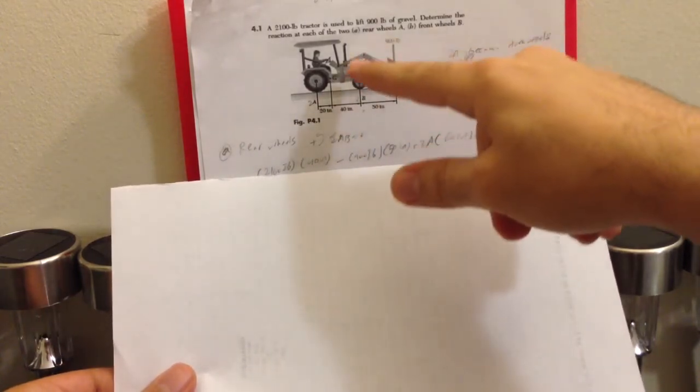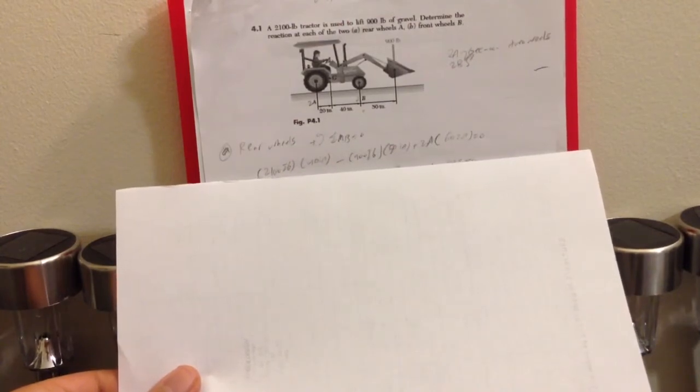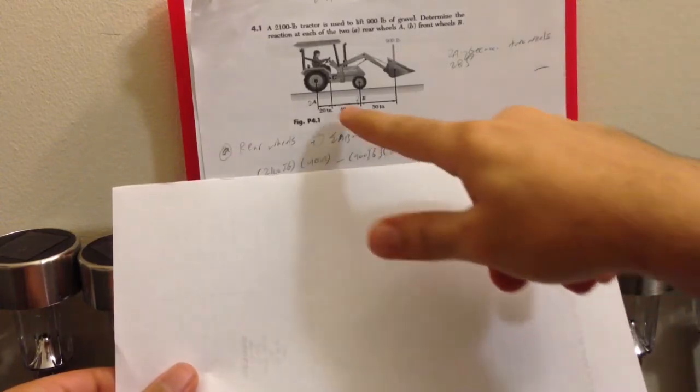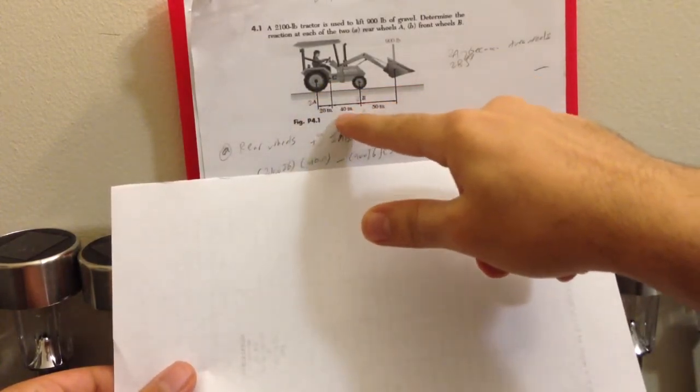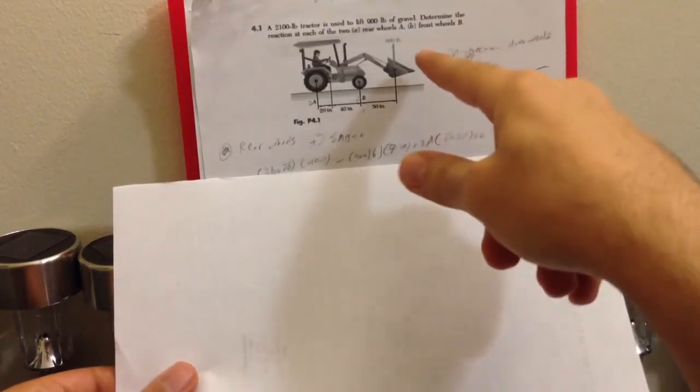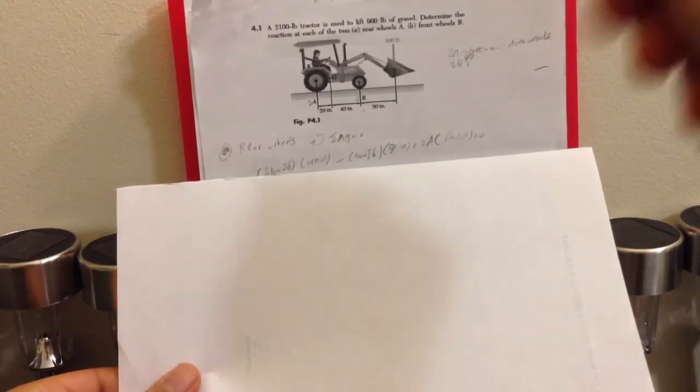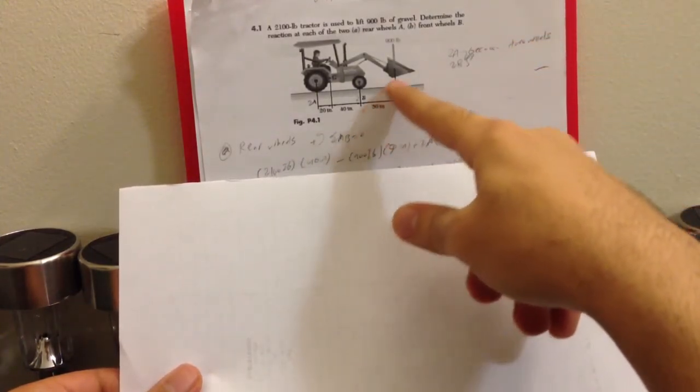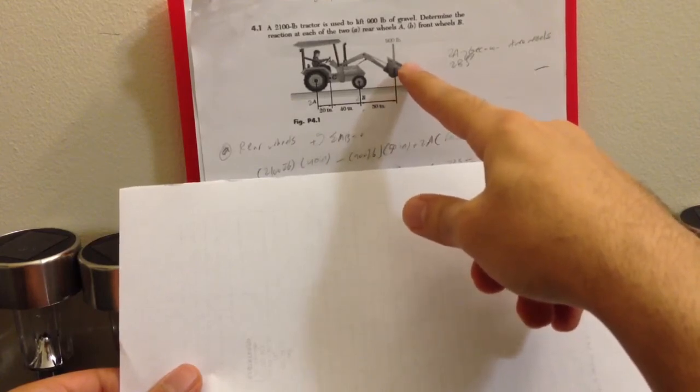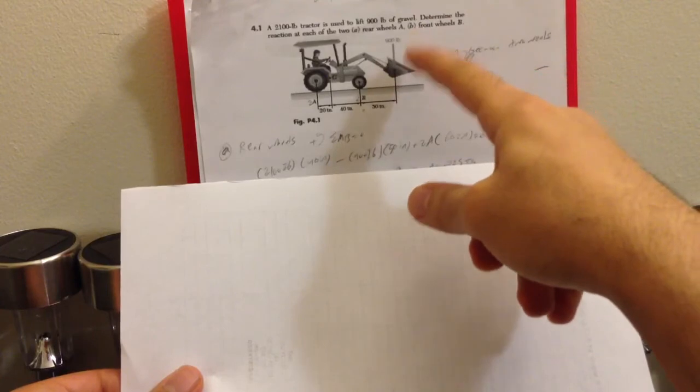And then we have to use the 2100 LB times 40. As we can see, the distance from point C to point B is 40 inches, minus 900 LB times 50. As we can see from point B to this point, which is the hopper, which also has a force.